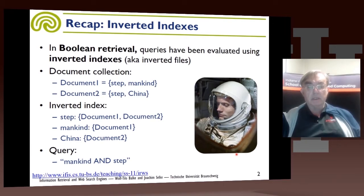So, here is again an example of an inverted index. We have two trivial documents. The inverted index has three words in it: step, mankind and china. And each of those words points to the documents that they're in. And then here's a typical boolean query, mankind and step. Which obviously, will only give you one response, document one.